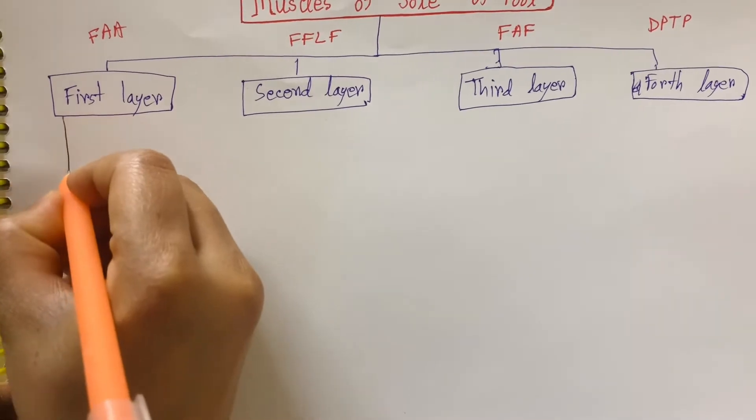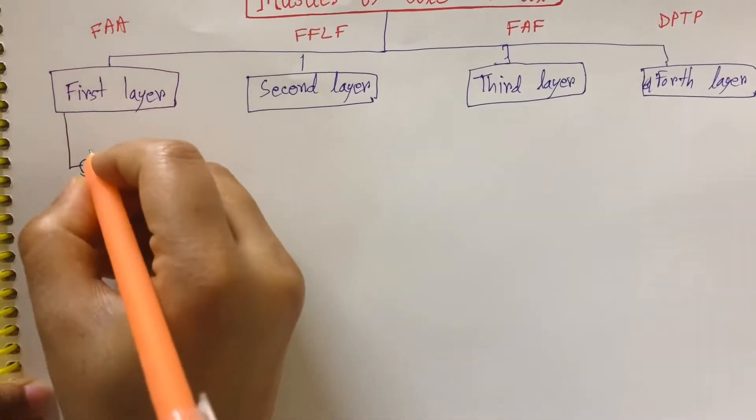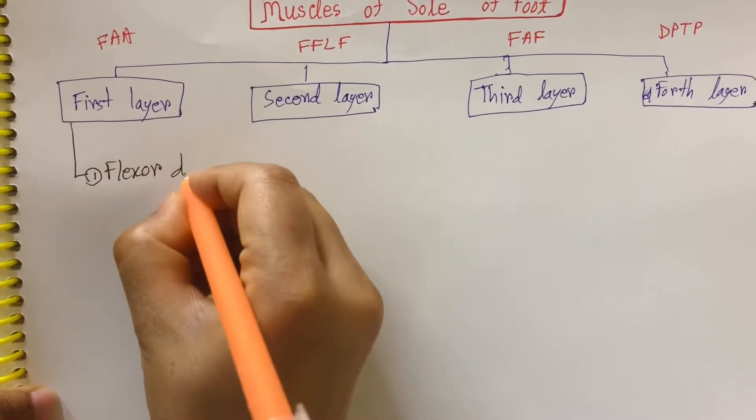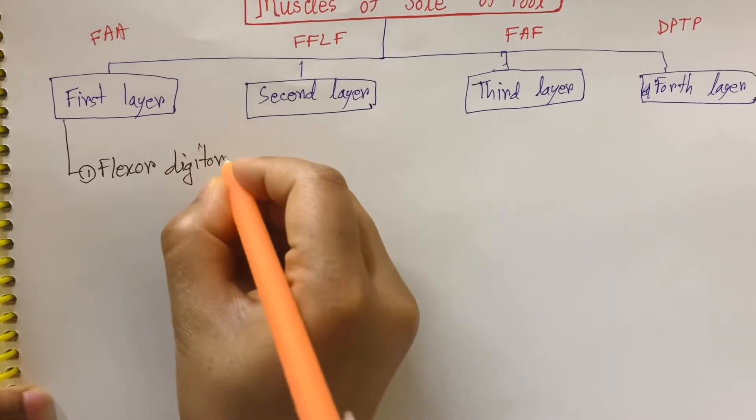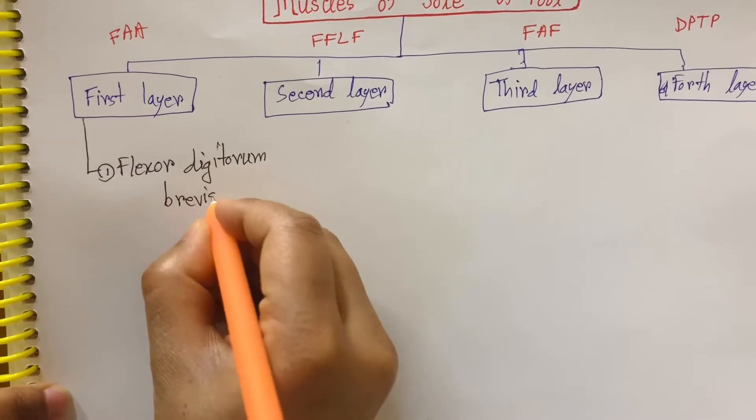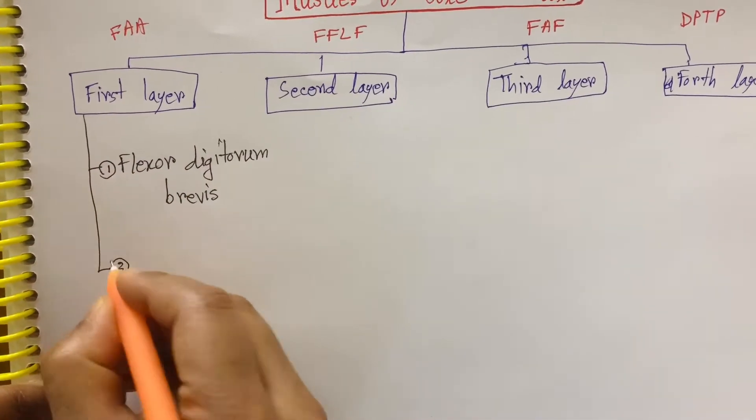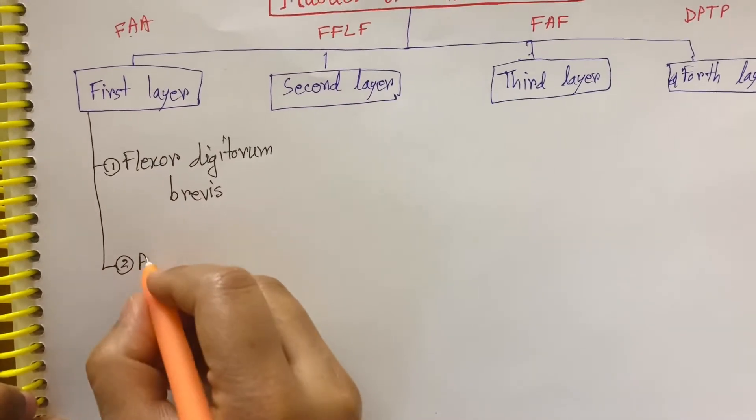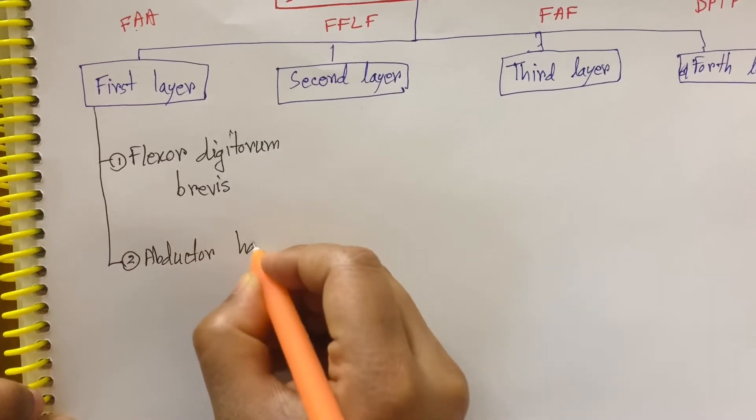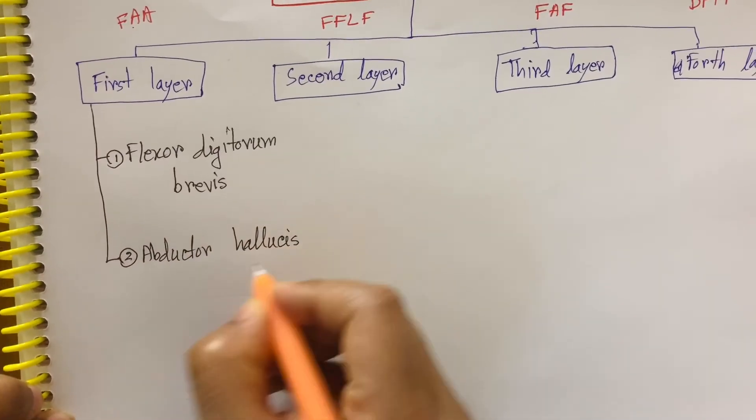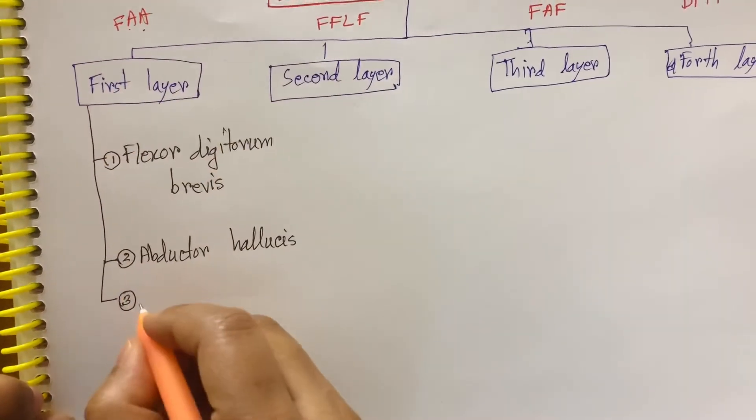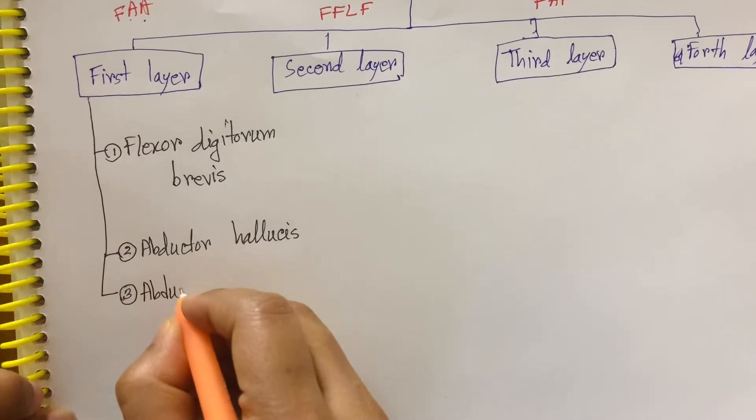F: Flexor digitorum brevis. Then A: Abductor hallucis. And another A: Abductor digiti minimi.